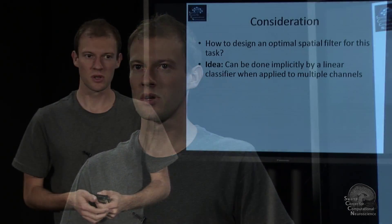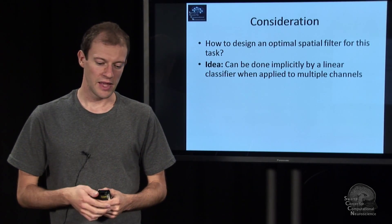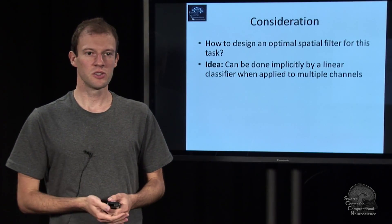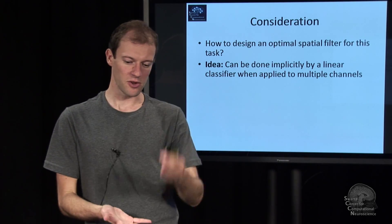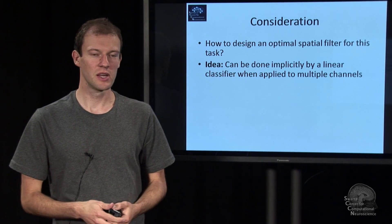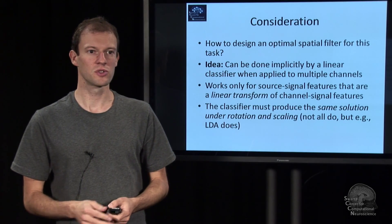So for this reason, a linear classifier, if applied properly, can actually implicitly learn an optimal or optimized spatial filter and tell you how to weight the different channels properly. And thereby implicitly operate on source features.